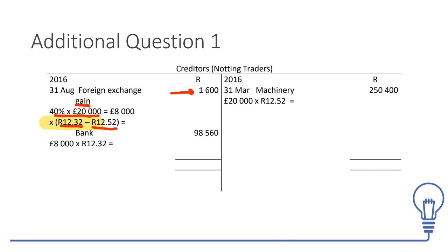If you have an indirect quotation, do it the long way: 8,000 pounds divided by the rate you raised it at, minus 8,000 pounds divided by the rate you want it at. Don't get caught in the trap of thinking the bracket shortcut works for indirect quotations — it only works with direct quotations. Also remember to pass the settlement payment entry: debit the creditor, credit bank at the spot rate to show the cash has been paid.